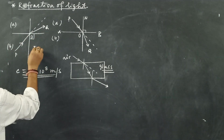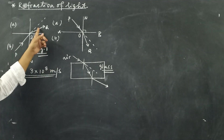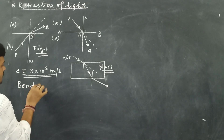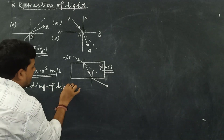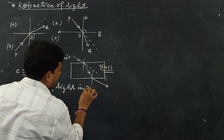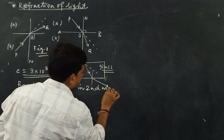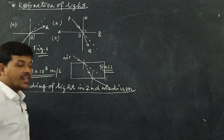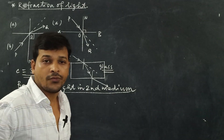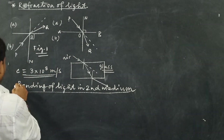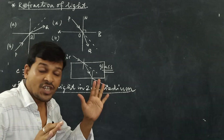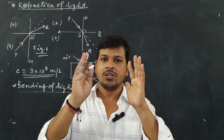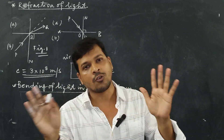In figure one, the bending of light occurs in the second medium while coming from the first medium — this is called refraction of light. This bending occurs due to the change of speed of light in the second medium. If the speed of light remains the same, the path remains unaltered. This happens only for oblique incidence of the light ray.